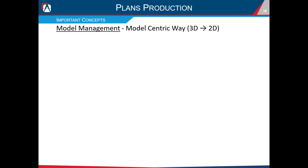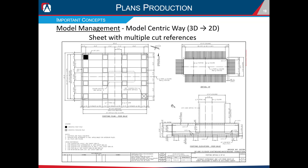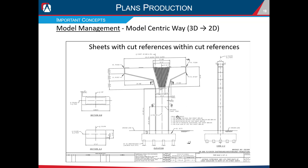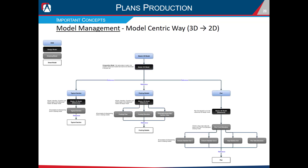What does model management look like in a model-centric workflow going from 3D to 2D? It depends on the content on the sheet we're producing, and there are a few different workflows we'll likely encounter. The first is a sheet with a single cut reference on it. Another is one with multiple cut references. And the last is a sheet with cut references within other cut references. The best way to visualize this is with a flowchart, with color-coded boxes: blue for DGN files, black for design models within the DGN, gray for drawing models, and white for sheet models.